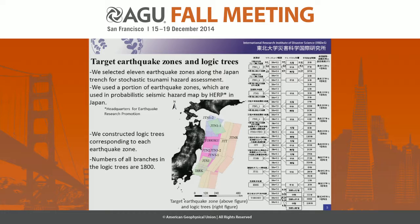In order to evaluate tsunami height stochastically, we selected 11 earthquake zones, including the March 11 Tōhoku earthquake-type fault along the Japan Trench, as shown in this figure. We used earthquake zones from the probabilistic seismic hazard map by HERP — the Headquarters for Earthquake Research Promotion in Japan. We constructed logic trees corresponding to each earthquake zone, as shown in the right figure. You can see many branches in the logic trees. The total number of branches across all logic trees is 1,800.